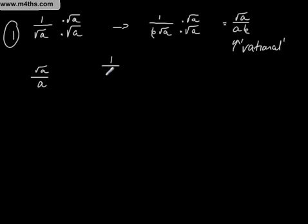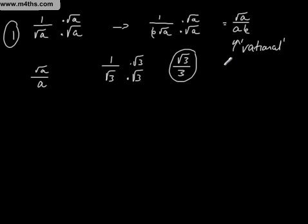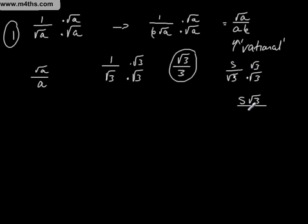Let's look at an example. One over root 3 — all we need to do to rationalise this is multiply top and bottom by root 3, and we get root 3 over 3. It would not differ if we had five over root 3 — multiply top and bottom by root 3 and we get five root 3 over 3.